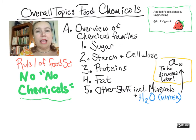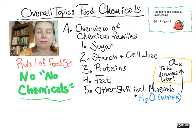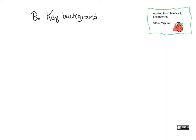We're going to look at a bunch of different chemical families and what they're made of and where you commonly find them. Some key background that we're all going to need to be able to speak together is some basic chemical symbols and nomenclature.